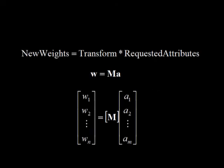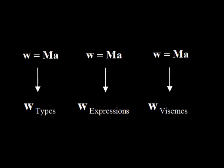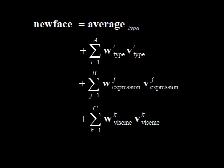The final step of our algorithm is the generation of new faces. Given any desired face attributes, we can now, with a simple matrix multiply, generate a new set of eigenvector offset weights. This step is performed three times using three sets of attributes, in order to generate three new sets of weights for face type, expression, and viseme morphing. These weights are then combined with the original computed eigenvectors and used to offset the vertices in the average face model.